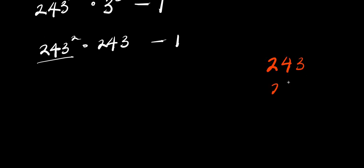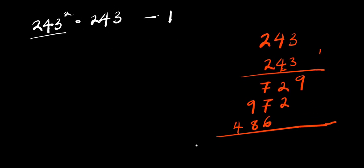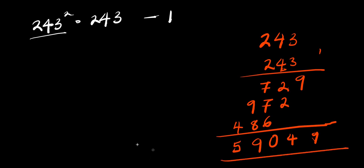That will be 243 times 243, so we multiply that out: 3 times 3 is 9; 3 times 4 is 12, write 2 carry 1; 3 times 2 is 6 plus 1 is 7. Then 4 times 3 is 12, 4 plus 1 is 9. Then 2 times 3 is 6; 2 times 4 is 8; 2 times 2 is 4. Adding everything together gives us 59,049.